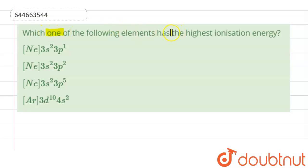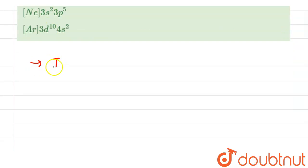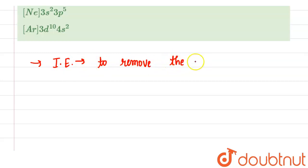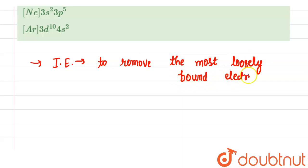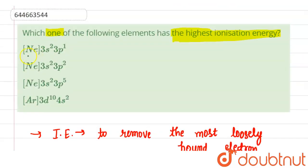Our question is: which one of the following elements has the highest ionization energy? First, let's understand what ionization energy is. The minimum amount of energy required to remove the most loosely bound electron from an isolated gaseous atom, so as to convert it into a gaseous cation — this is called ionization energy. Now let us see the options.